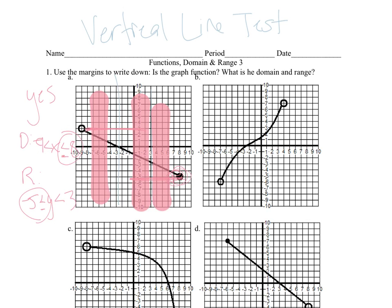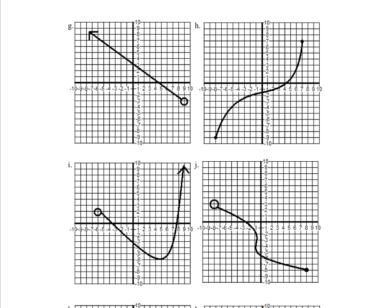Let's find an example that's not a function. Looking at example J — if I draw a vertical line in one spot it crosses once, but if I draw a vertical line in another spot it crosses the graph multiple times. That one x-value has multiple y-values for this relation, so this is not a function.